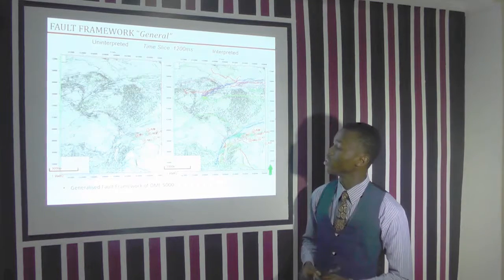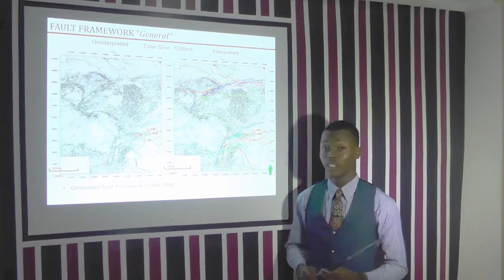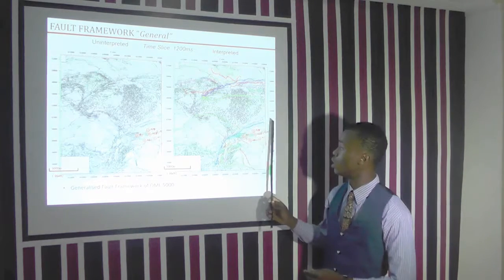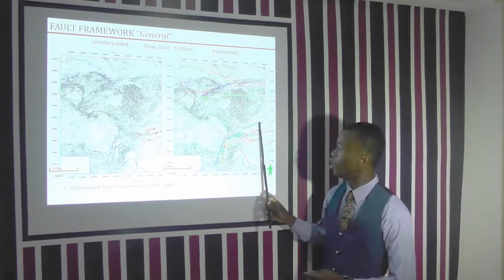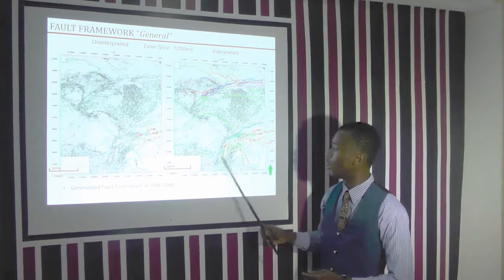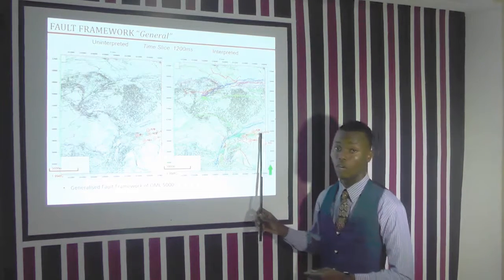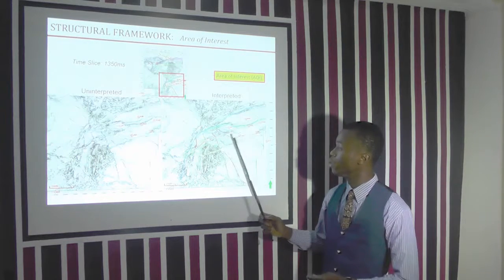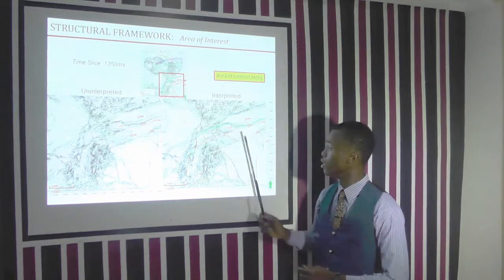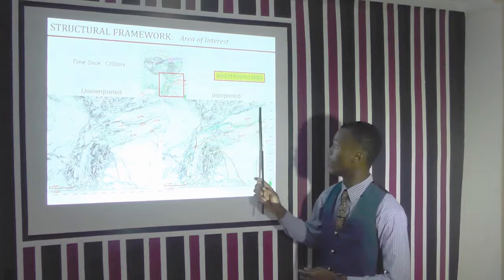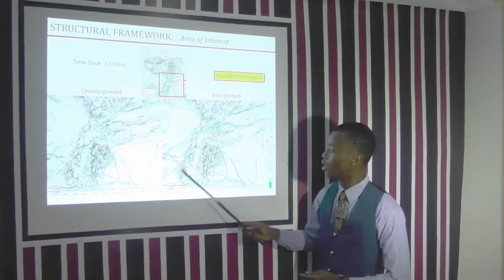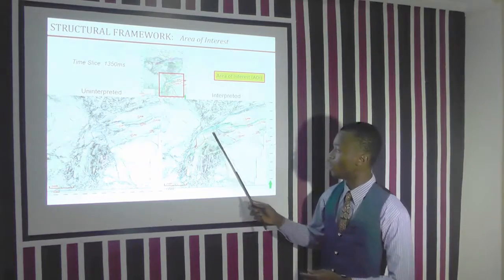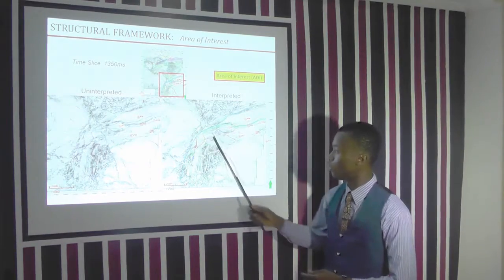This is a generalized time structure map and a depth structure map of OEML 5000, showing the area of interest and the normal faults bounding it, in which all our wells are located. This is a zoomed image of our area of interest. These are the wells located within it, and we can see that the normal faults bound our area of interest, with smaller faults branching away from it.